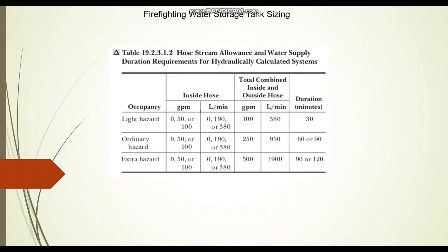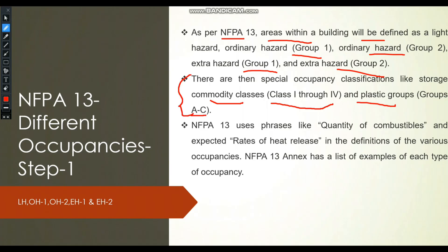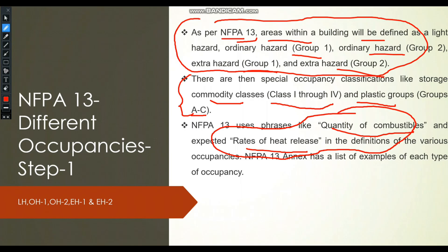Now we will see a simple example of how to identify the hazard from different applications, then proceed to tank sizing. As per NFPA 13, areas within a building are defined as light hazard, ordinary hazard group 1, ordinary hazard group 2, extra hazard group 1, and extra hazard group 2 — five categories. There is also a special commodity class (class 1 to 4) and plastic groups (A to C) for special projects like warehouses. Overall, NFPA 13 classifies hazard based on quantity of combustibles and rate of heat release.